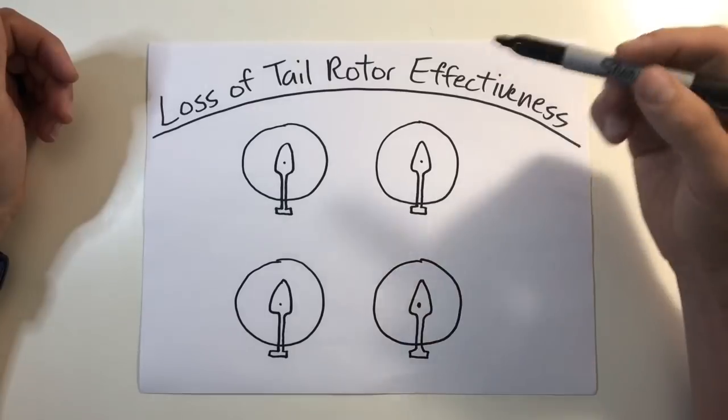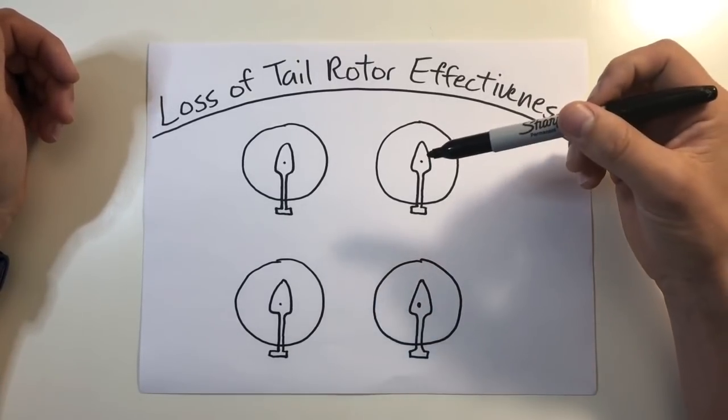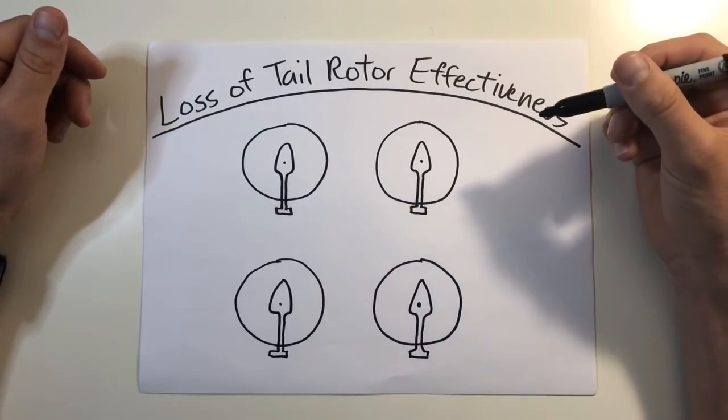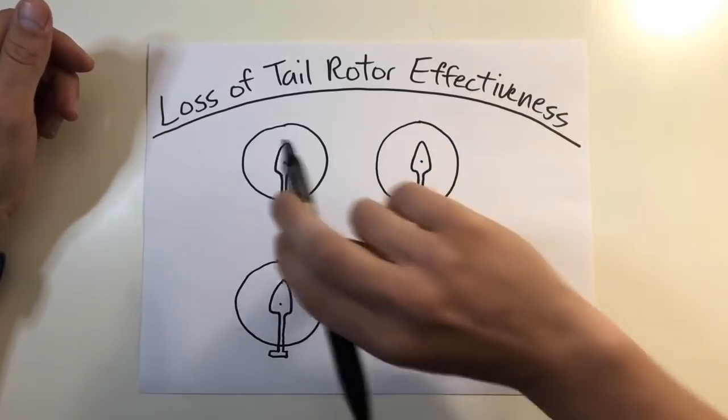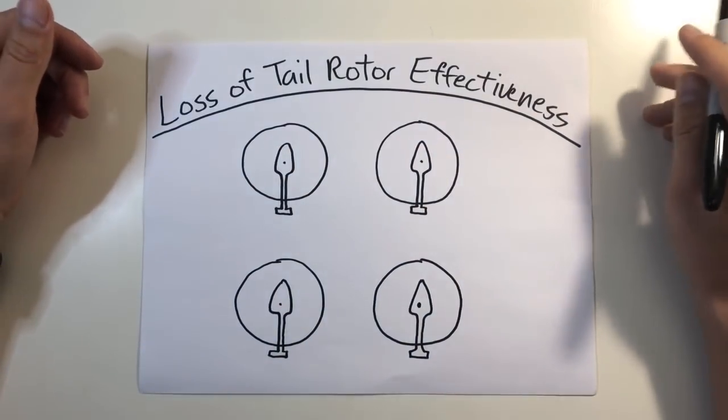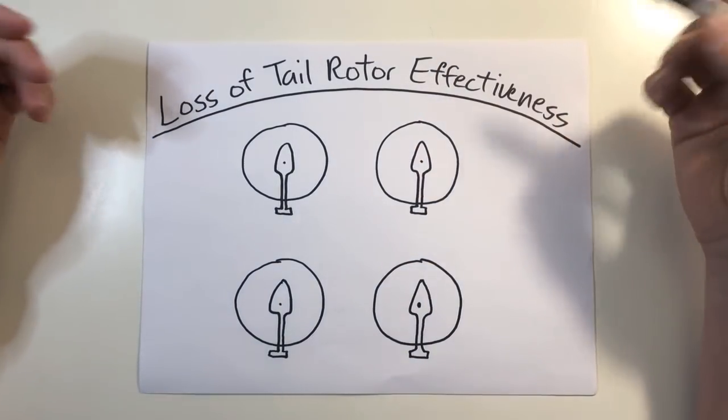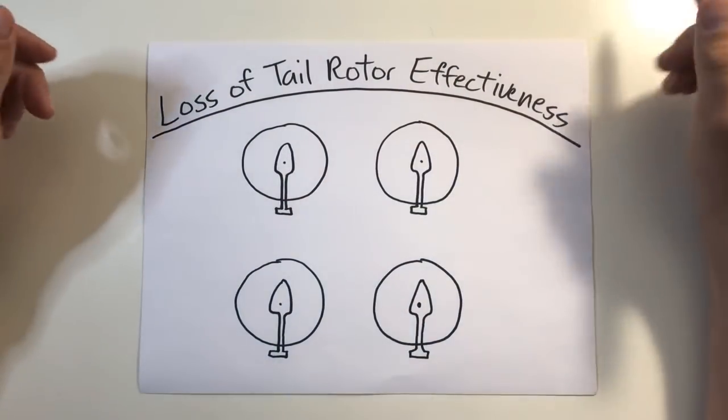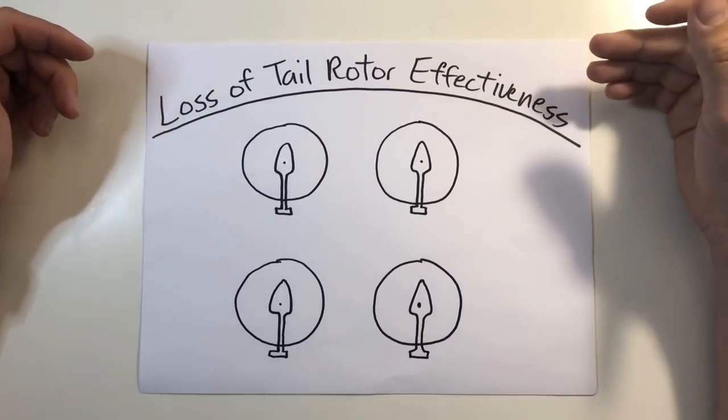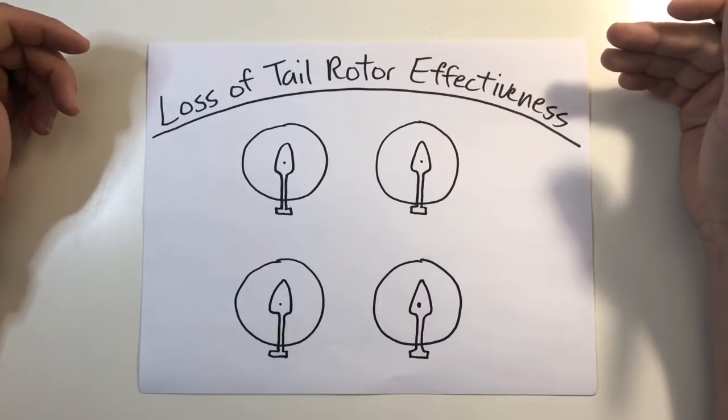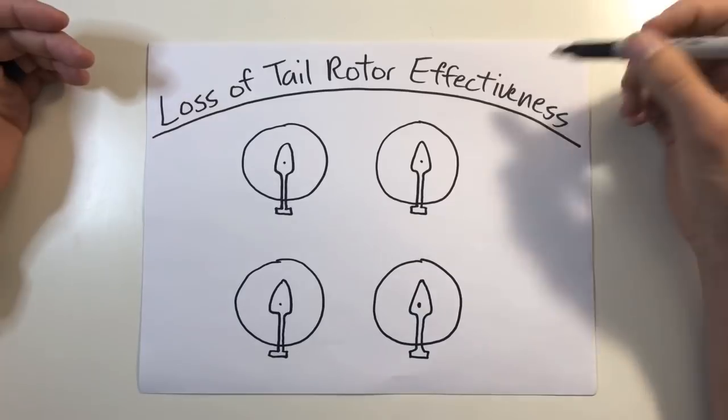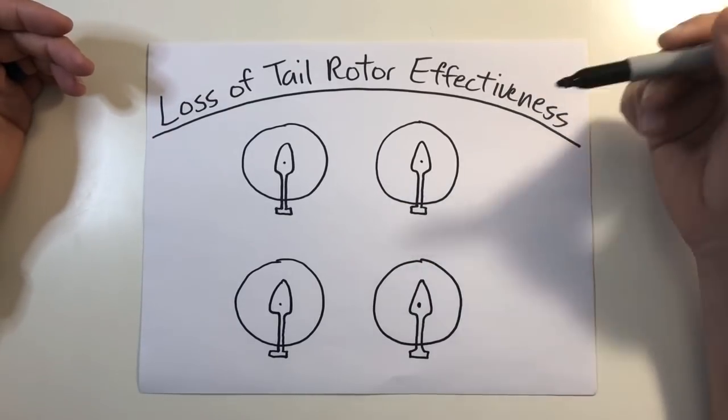Loss of tail rotor effectiveness is an uncommanded rapid yaw rate that does not subside on its own accord and which, if not corrected, can result in loss of helicopter control. The yaw rate tends to generally be to the right in a counterclockwise rotor system and to the left in a clockwise rotor system. For all of our lessons, we've been doing counterclockwise rotor systems, so generally to the right in most American-made helicopters. This is not related to a break in the drive system and it's not a stall condition in the tail rotor. Some commonly say it's a tail rotor stall condition, but this is just a misconception. The tail rotor thrust is merely insufficient, but not stalling.